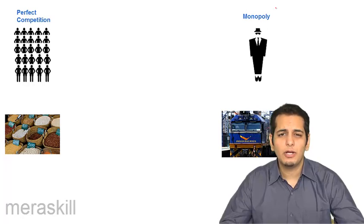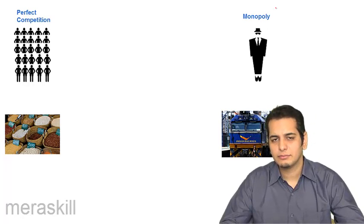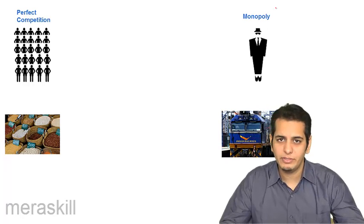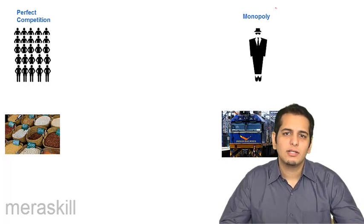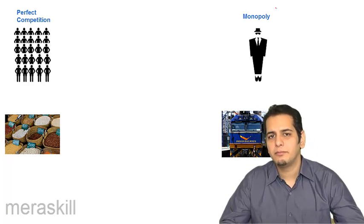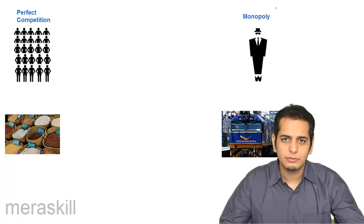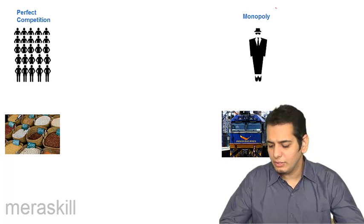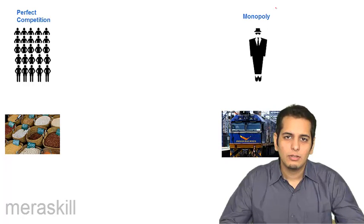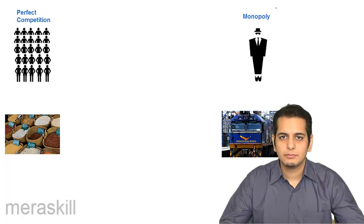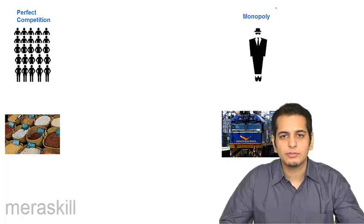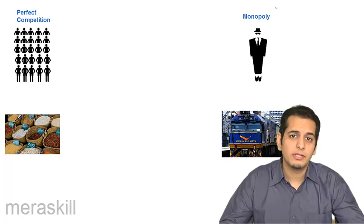Next is monopoly — it's the stark opposite of perfect competition. In perfect competition you have many sellers, but in monopoly, as the word says, 'mono' means one and 'poly' means seller, so there is only one seller in the market. There may be innumerable buyers, but the seller is only one. Railways is one of the best examples of monopoly in India, and defense is another — private entrepreneurs are not allowed to get into the business of national defense.